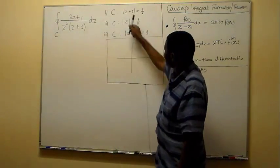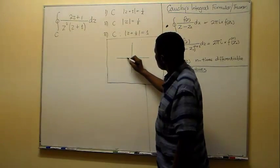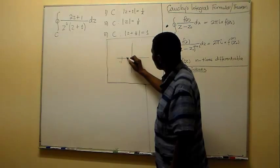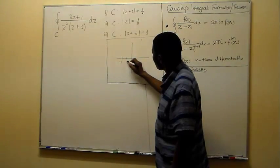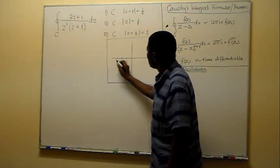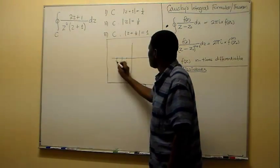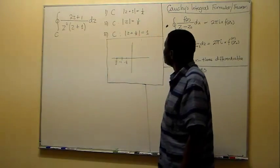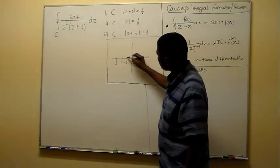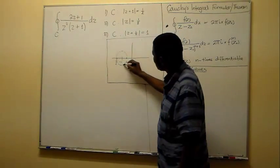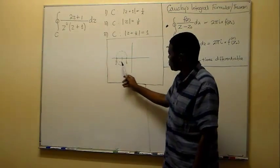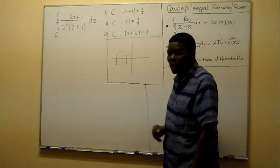So, a circle centered at minus 1: we can place minus 1 there, the radius one-half extends to minus one-half on one side and minus three-halves on the other. The circle runs roughly like that, and the only pole enclosed is minus 1.